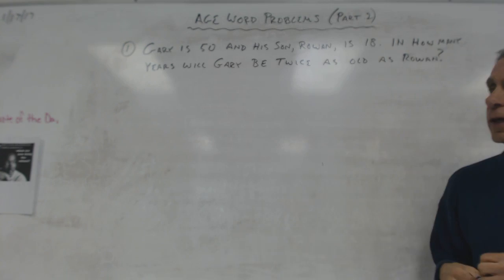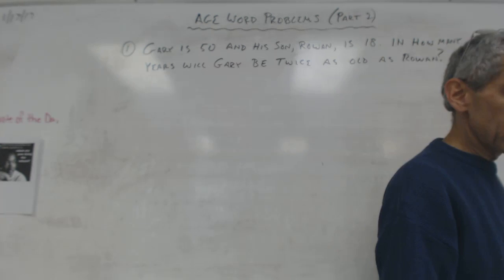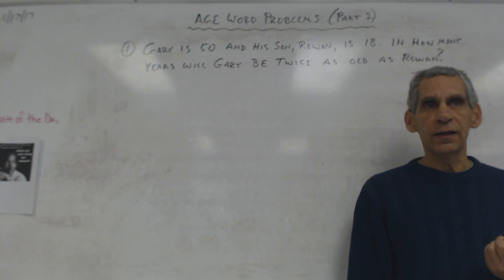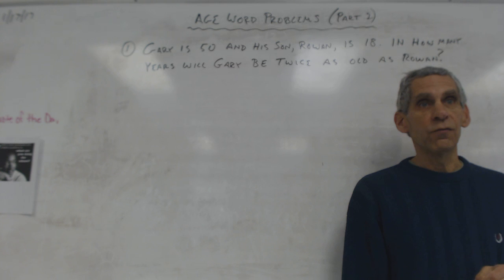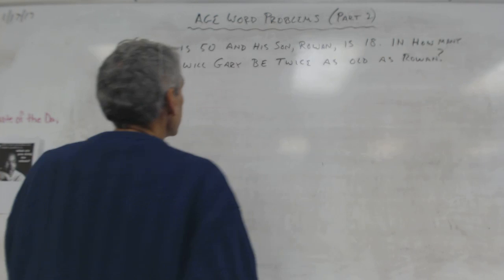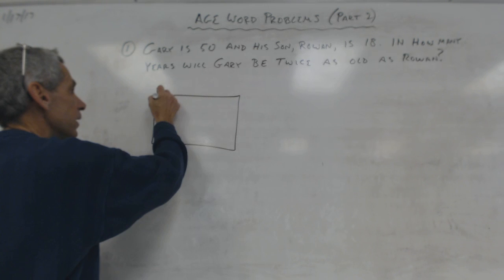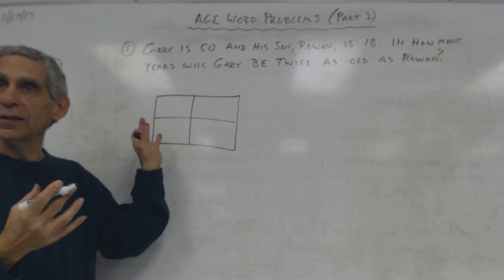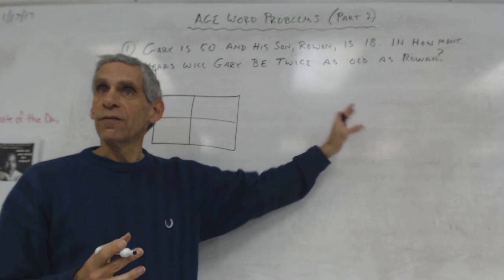Yesterday we talked about age word problems. You had the introduction to it. Now I'm going to throw two more styles of age word problems. They're just little tricks you have to know. First of all, I'm always going to start with my box. I find the box really helpful for organizing my information and then I know what I'm using to create my equation.